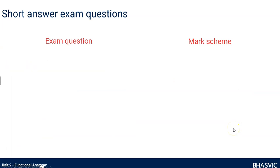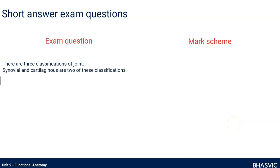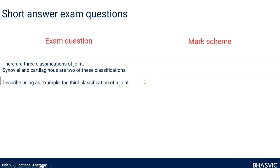Let's have a look at exam questions. The exam paper has a lot of short answer questions, which might be 1, 2, 3, 4, or possibly 5 marks, plus some longer questions. Short answer questions will often give you a little bit of information as part of the question. For example, this question says there are three classifications of joints; synovial and cartilaginous are two of these. For four marks, describe using an example the third classification.